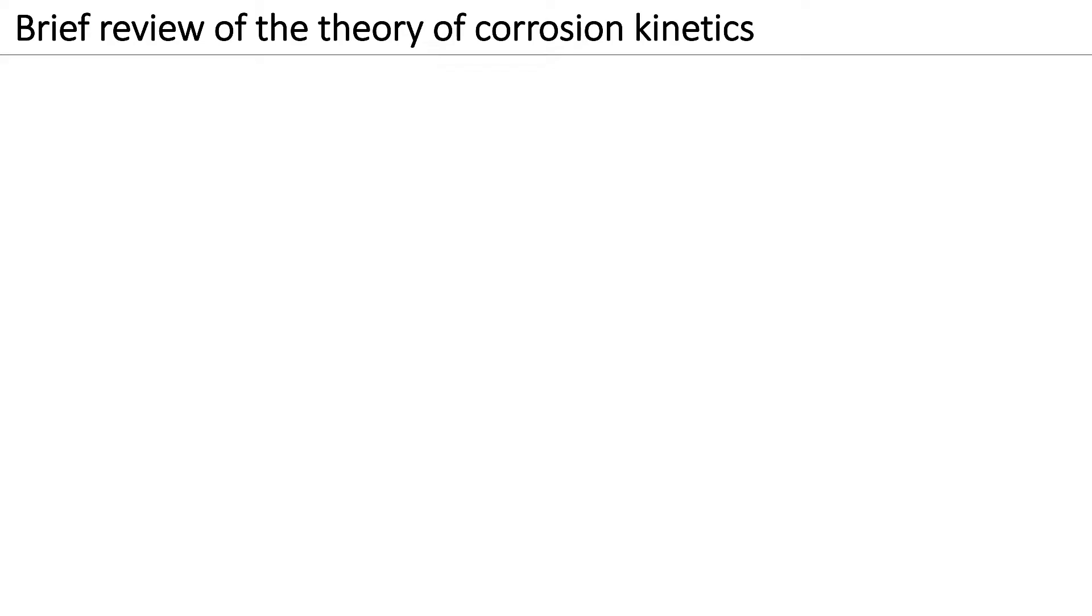Corrosion is a process that generally involves at least one cathodic reaction and an anodic reaction. The cathodic and anodic half-cell reactions are independent of each other.